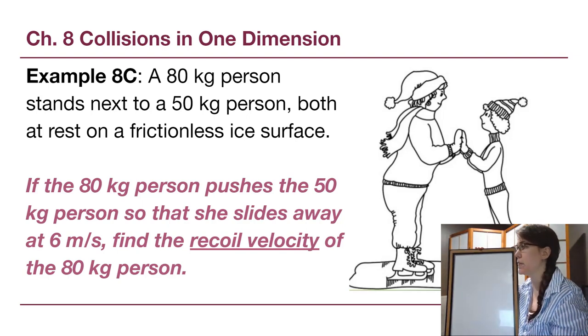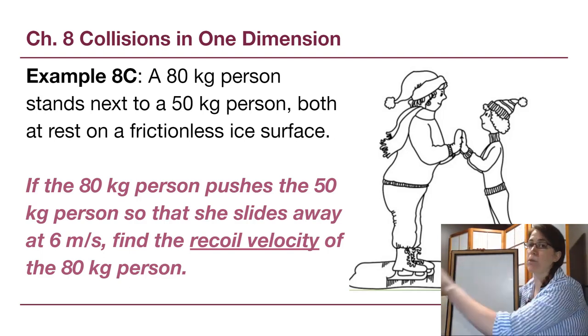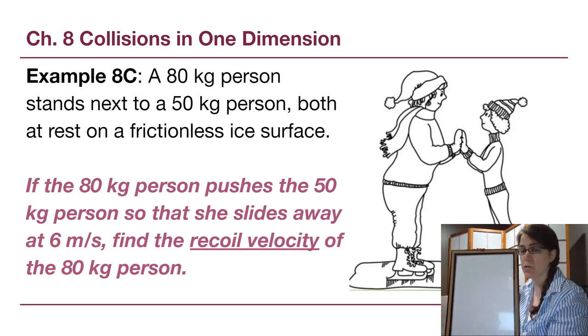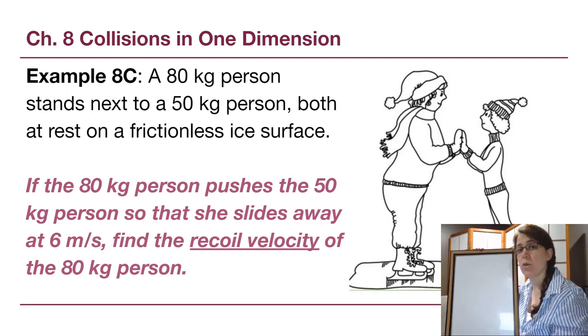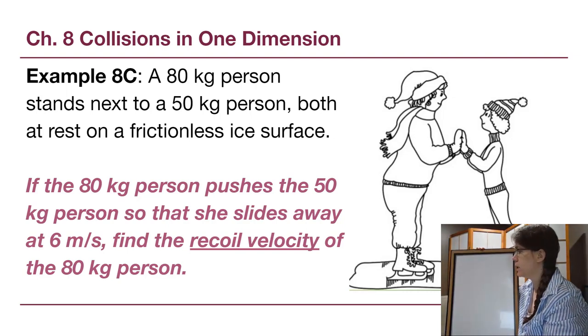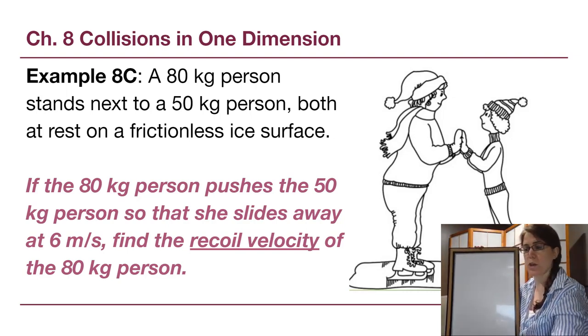There are other examples that we will see in assignments and assessments. So, for example, one of the problems in the textbook is a cannon, which shoots a cannonball in one direction, which means the cannon goes in the opposite direction, that kind of situation. And we want to recognize that that is also a collision problem, a conservation of momentum problem. Okay, so let's get this one started.